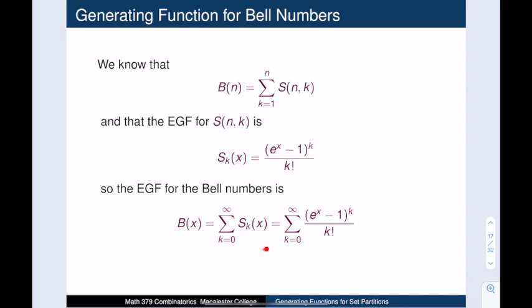B(x) is equal to the sum, as k goes from 0 to infinity, of these Stirling number generating functions. Each of these Stirling number generating functions is (e^x minus 1) raised to the kth power divided by k factorial. And so that's our answer.